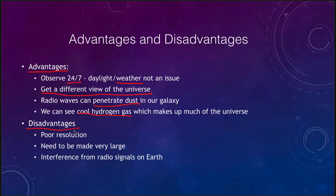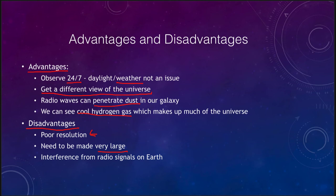Some disadvantages of radio telescopes: one is poor resolution. The resolving power of a telescope depends on its size and on wavelength — at very long wavelengths, resolution gets much worse. Radio wavelengths can be in the centimeters range, meaning their resolution is many times worse than optical telescopes. Therefore, we need very large telescopes for radio astronomy; a small radio telescope might be in the 20 to 30 meter range, comparable to the very largest planned optical telescopes. We also get interference from radio signals being transmitted on Earth, similar to light pollution for optical telescopes.